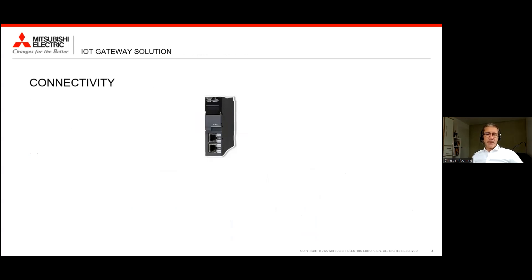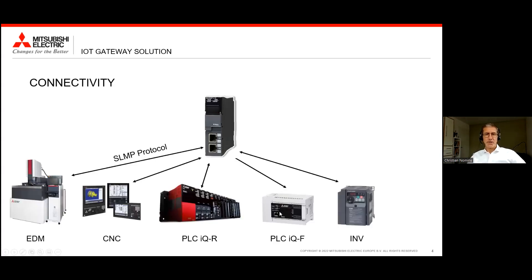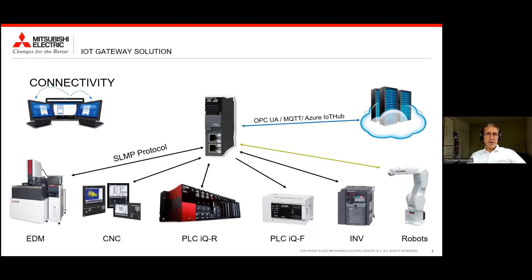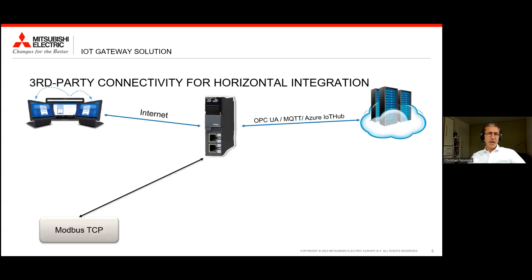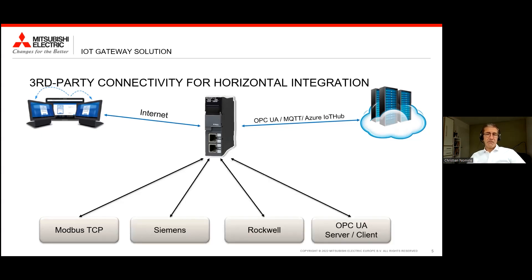That IoT gateway comes with a lot of built-in connectivity options for typical brownfield applications. There is Mitsubishi Electric equipment, cloud protocols, and remote maintenance connectivity. But even more important for brownfields is the third-party connectivity, which comes out of the box in the form of Modbus TCP communications, Siemens, Rockwell, and third-party OPC UA servers and clients. So that is the ideal platform not only for fetching data and sending it up to the cloud, but also for horizontal machine-to-machine communications in large factories.